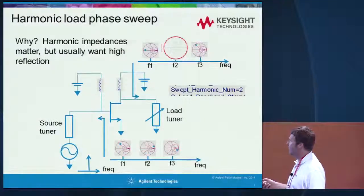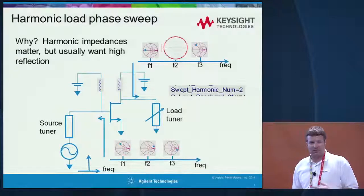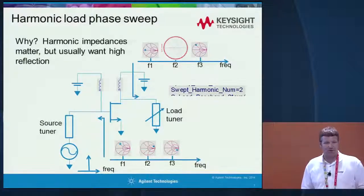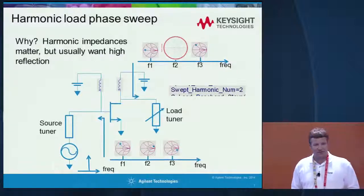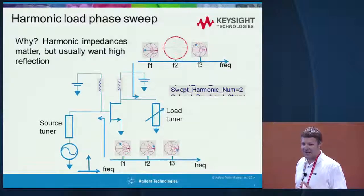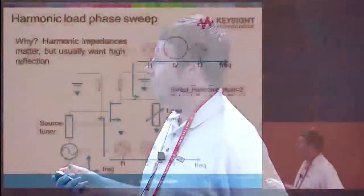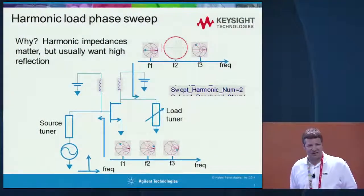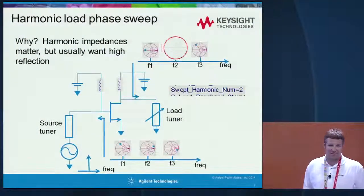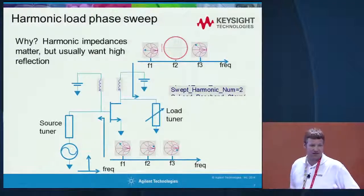Similarly, we can run a harmonic phase sweep — we can change the phase of the harmonic and look at any particular fundamental impedance. Changing the harmonic phase may change the class of operation of our amplifier, and we can sweep around the edge of the Smith chart. Harmonic impedances are typically going to be reflective, not resistive — usually looking at open and short, sweeping the outer circle around the Smith chart. That helps us set the classes of operation. It's easy to just change the harmonic frequency and sweep it to see the results.